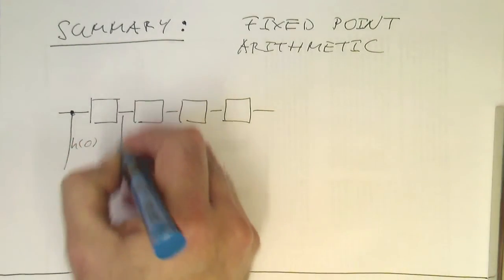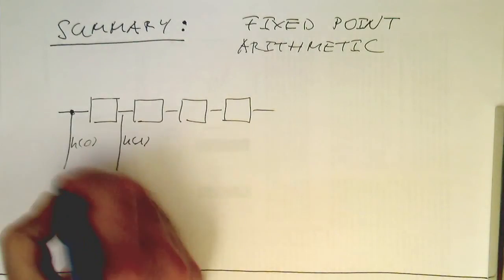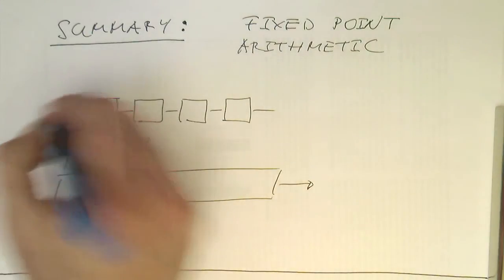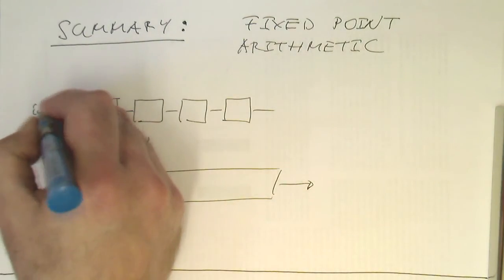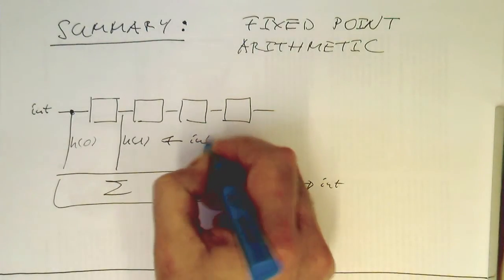So the h of 0, h of 1, they are all integer values.